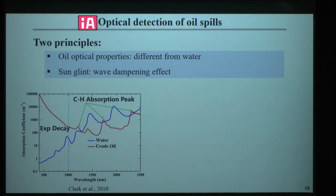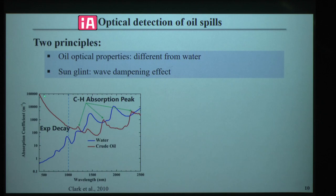Optical detection of oil spills is based on two principles. The first is that oil's optical properties differ from water. This is the absorption coefficient for crude oil and water — in short wavelengths, crude oil absorption coefficient is several magnitudes higher than water, and this coefficient exponentially decays toward longer wavelengths. Crude oil also features carbon-hydrogen bond absorption in the shortwave infrared.